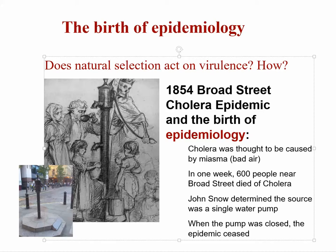Then we'll link it into conservation studies. One of the first instances where people thought about the spread of disease happened in 1854, called the Broad Street cholera epidemic. Cholera, which was thought to be caused by bad air, was spreading rapidly in London. In one week, 600 people near Broad Street died. A fellow named John Snow started tracing the pathways of people and began to realize it was all people walking by a particular water pump. He recommended that the pump be closed, and then the epidemic ceased.